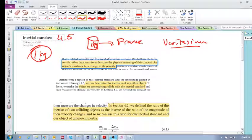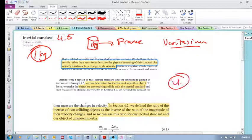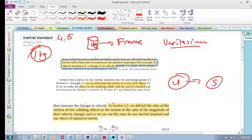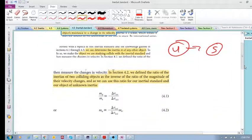Using the inertial standard, we can determine the inertia of any other object, the mass of any other object. How do we do that? We get the unknown object to collide with the inertial standard. We get them to collide. Then what? From our previous knowledge, what happens when they collide?